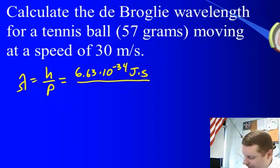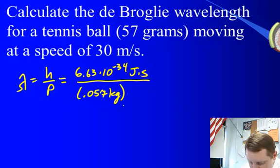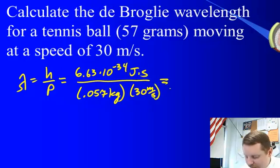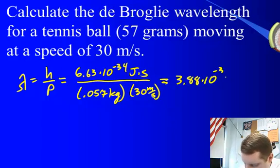Well, momentum is mass times velocity. So our mass is 0.057 kilograms. We've got to convert grams to kilograms first times its velocity, 30 meters per second. If I plug all that into my calculator, I get a wavelength around 3.88 times 10 to the minus 34 meters.